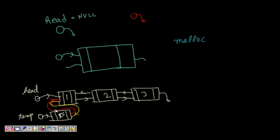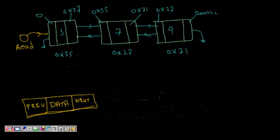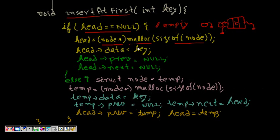We set temp->next equal to head, and head->previous equal to temp — these two connections are now fixed. Then we make head equal to temp, breaking the old head connection. Now head points to the new node (five), followed by one, two, and three. The doubly linked list now has four elements with all proper connections in place.